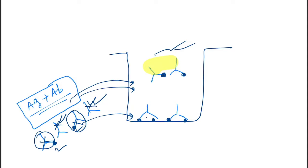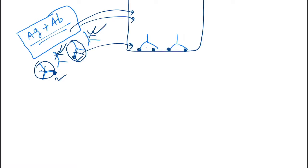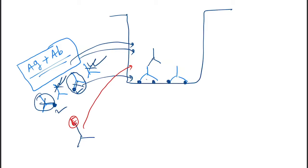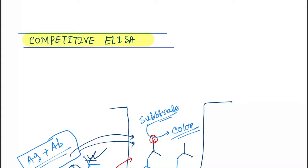A washing process is done to remove the antibody-antigen complexes. Then another antibody linked with an enzyme is added, which binds to the free antibodies on the surface. A substrate is added that reacts with the enzyme and causes formation of color. This is Competitive ELISA.